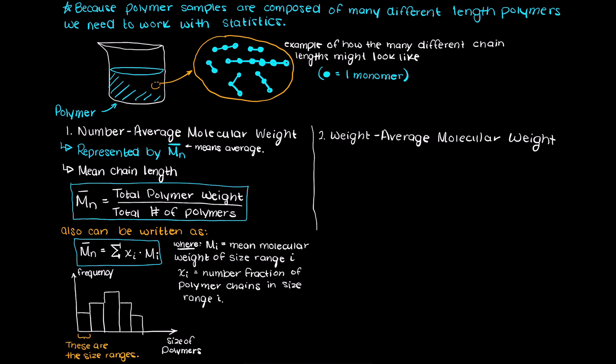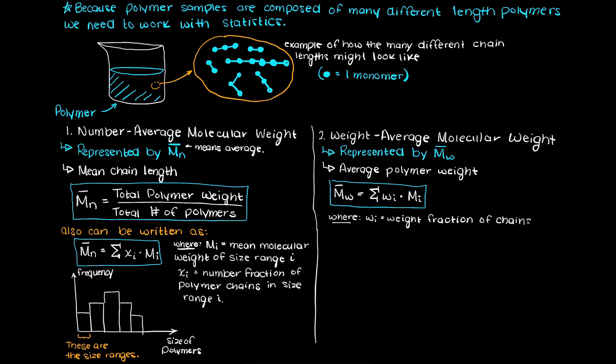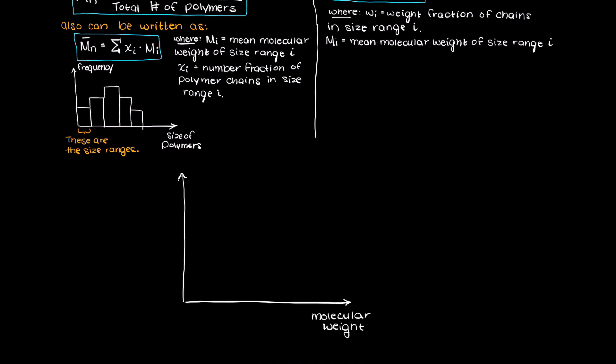Whereas the weight average molecular weight is the average polymer weight, so if you have a large number of long chains or a large number of small chains, this average will be brought larger or smaller respectively. This graph should make both concepts more clear to you.